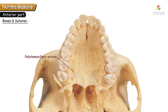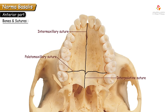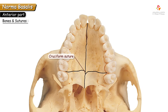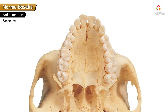The palatomaxillary suture is the suture between the palatine process of the maxillae and the horizontal plate of the palatine bone. If you join all these sutures together, they appear like a cross, so they are named the cruciform suture. Near the posterior border of the hard palate there are faint curved ridge elevations called the palatine crest.